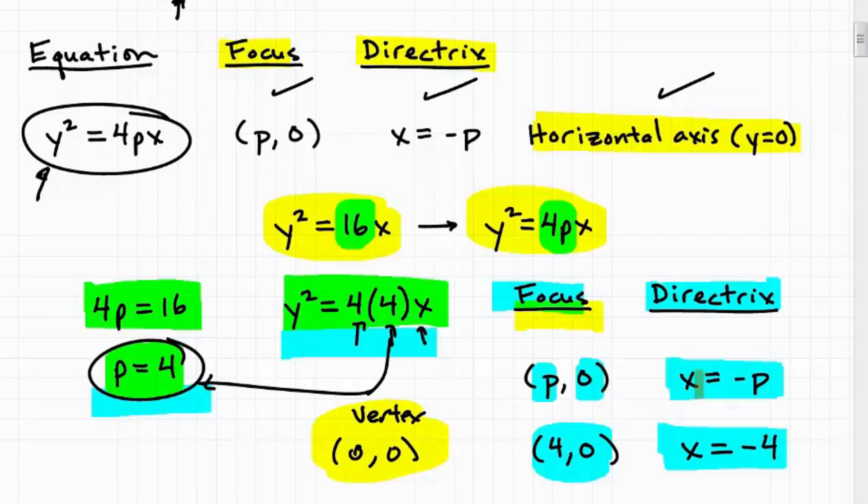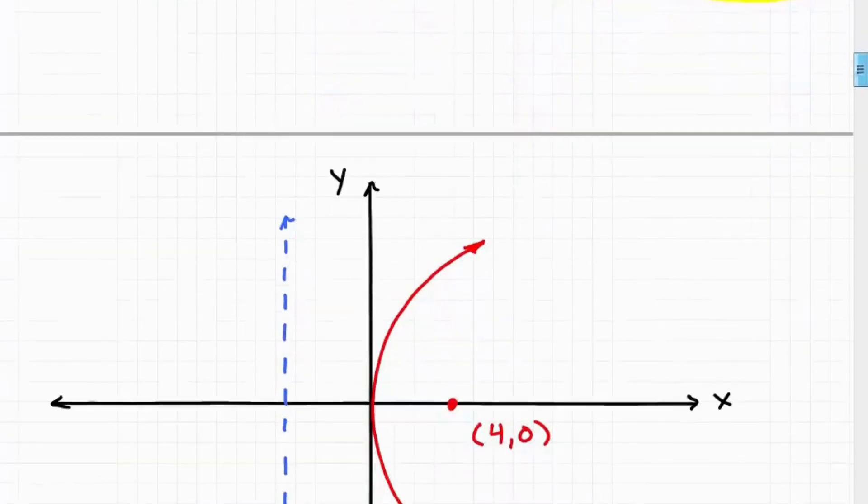So I have this piece of information, the vertex at 0, 0. I have the focus where it's located at 4, 0. I have the directrix, x equals negative 4, that line, and I know it's a horizontal axis parabola. So let's go ahead and plot all that information here.